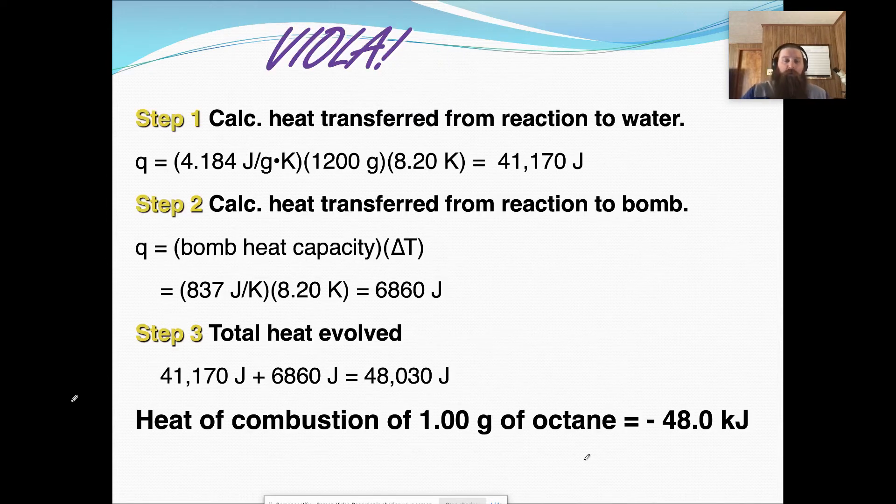So we're going to do the exact same thing we did a moment ago. So we calculate the Q of the water, of H2O. We do the specific heat of water times the mass of water in the bomb times the change in temperature. And that tells us we have 41,170 joules. And then we have the bomb's heat capacity, so 837 joules per Kelvin times 8.2, which is our change in temperature. That gives us another 6,800 joules. We add the two together, and we get 48,030. Now, this is heat leaving the reaction.